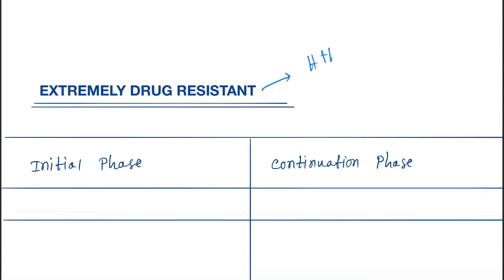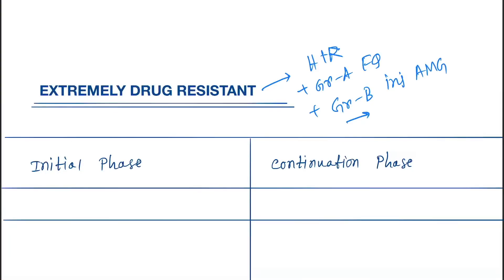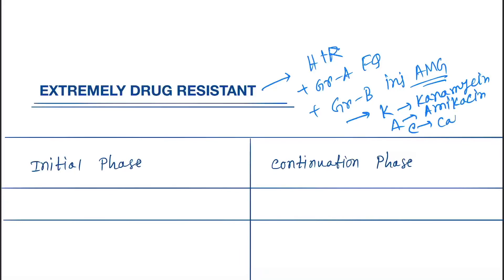Extremely drug resistant TB (XDR-TB) shows resistance to H plus R, plus Group A fluoroquinolones, plus Group B injectable aminoglycosides — specifically kanamycin, amikacin, and capreomycin.